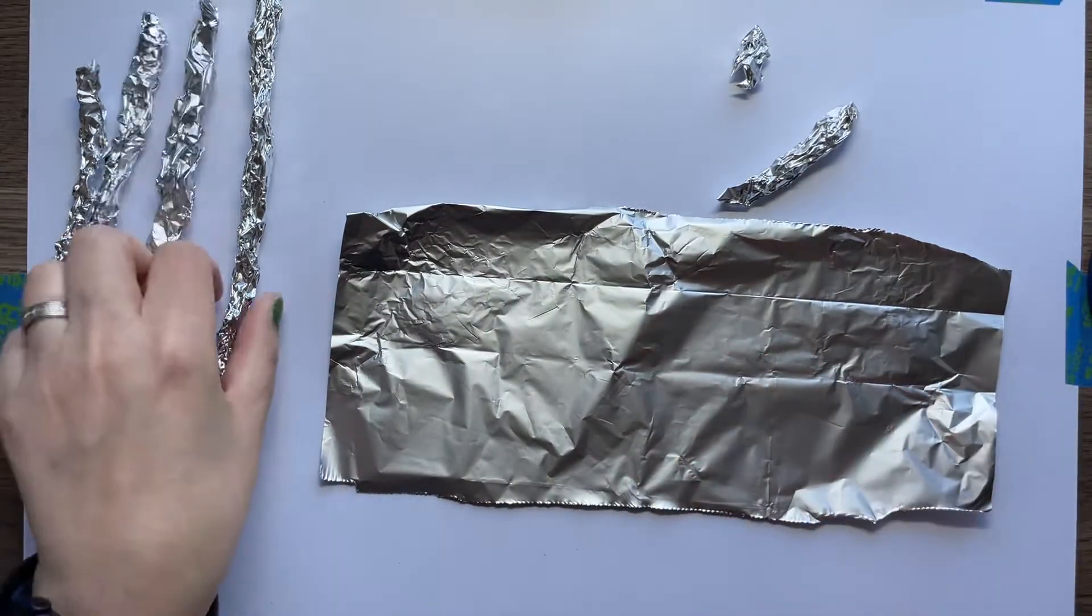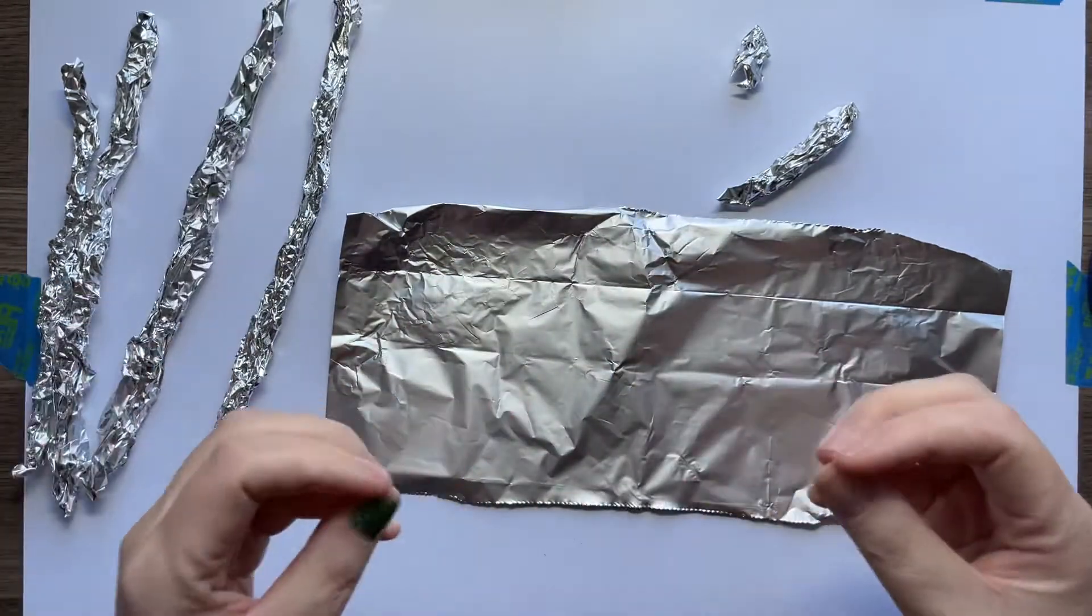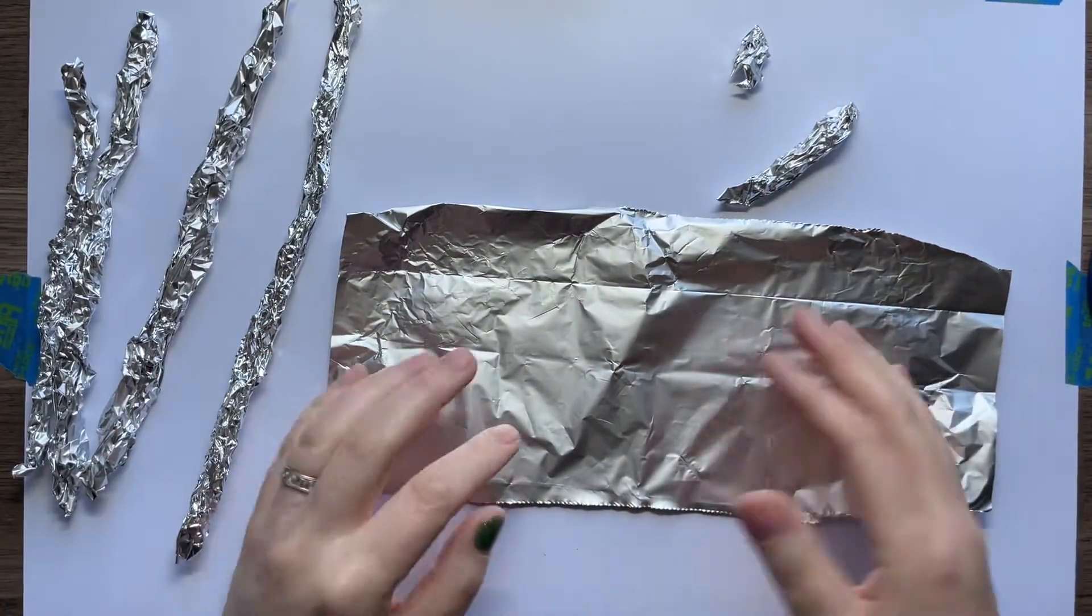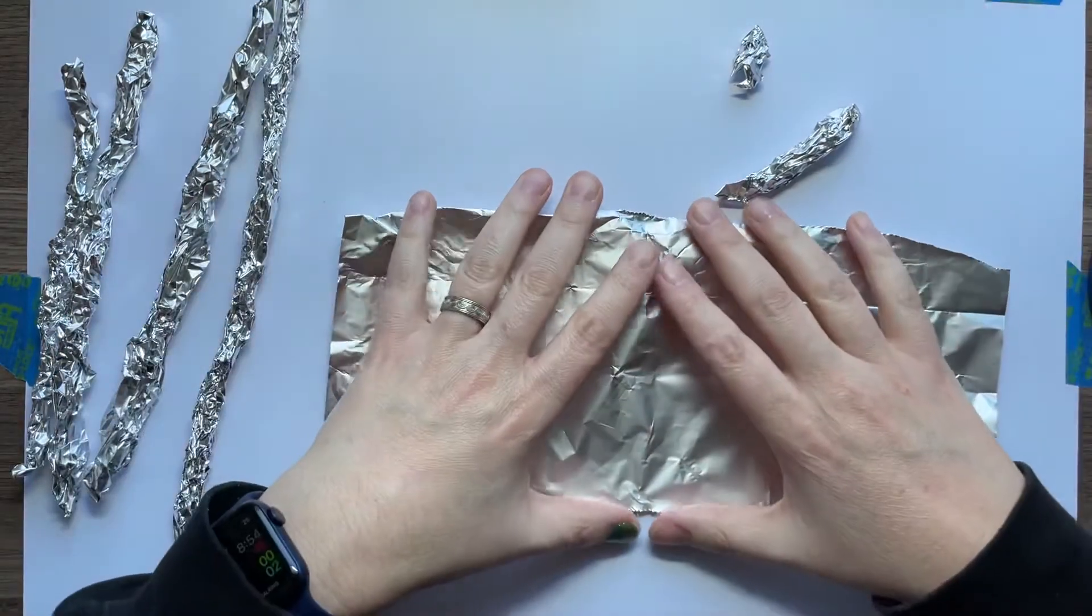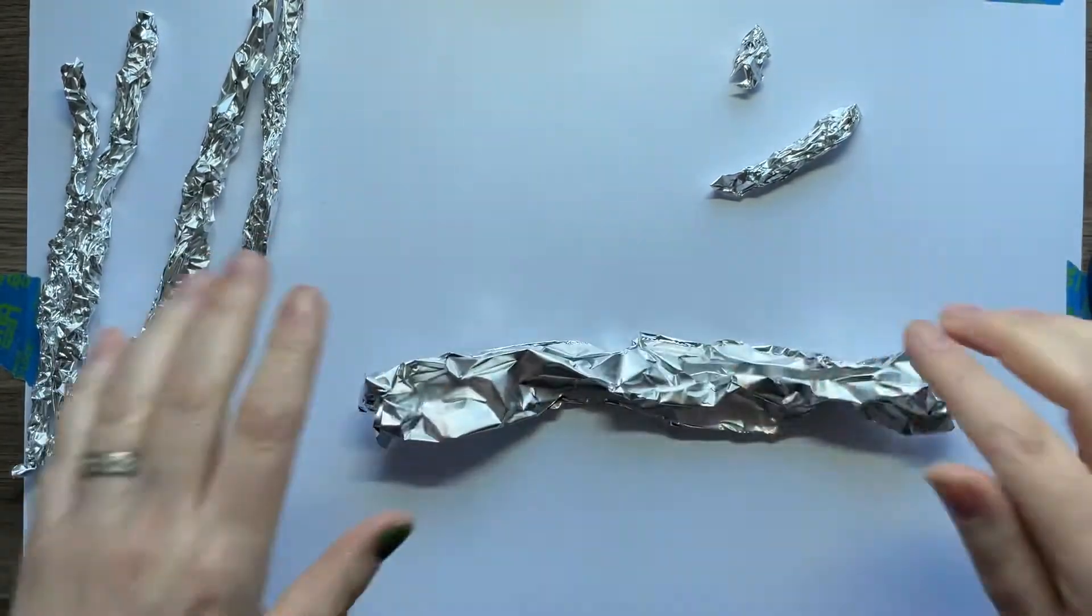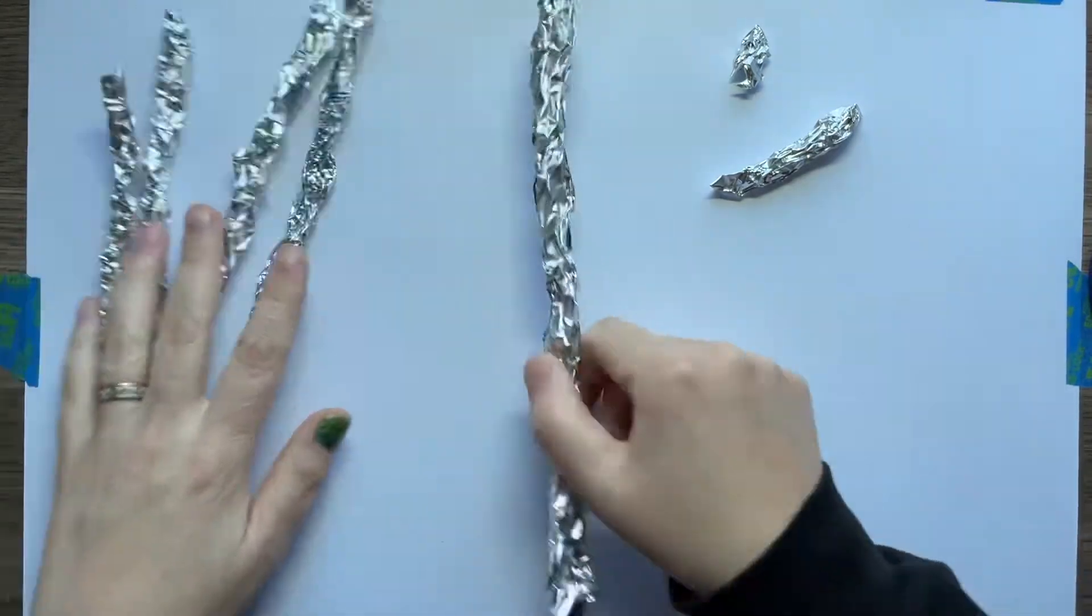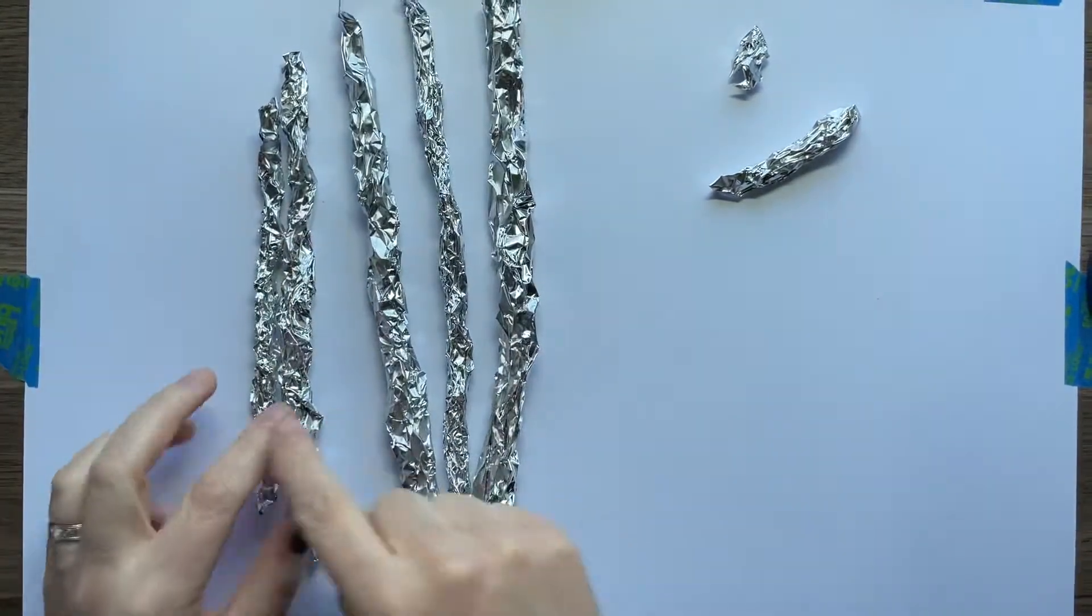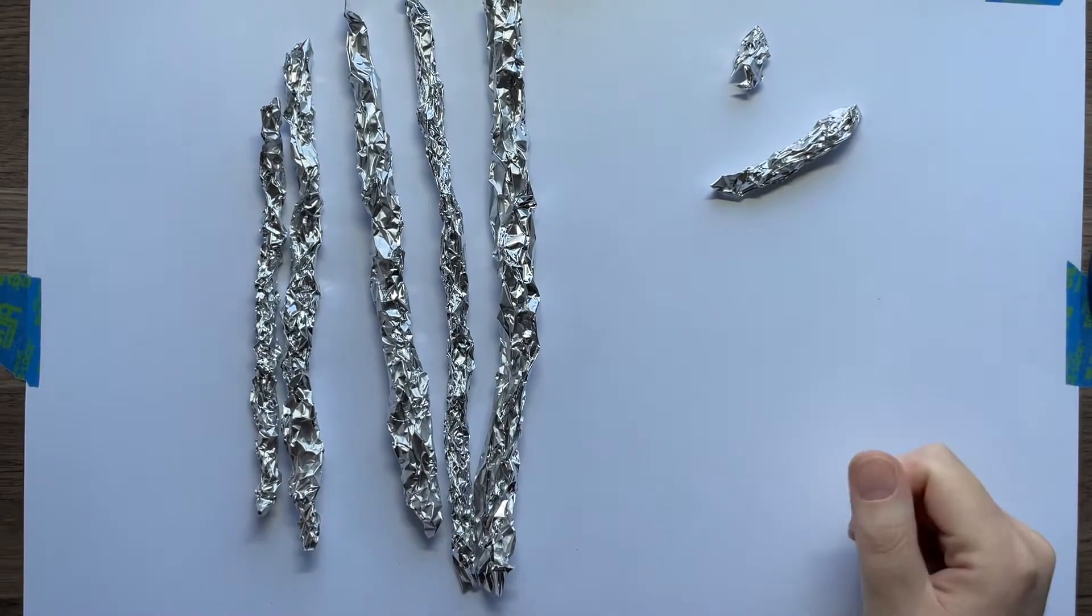We're crumpling it up on purpose to create little gaps and air spaces and to make it easier to shape. If you fold it flat, it's not going to work right. So it's really important that when you do this, you just crumple. Go ahead and make yourself several little crumples of tinfoil and I'll see you in the next video. Thanks everybody.